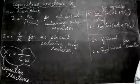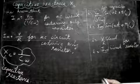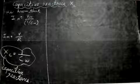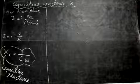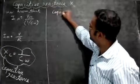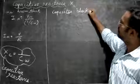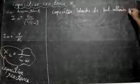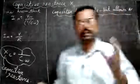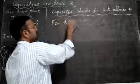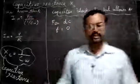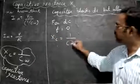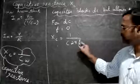Now let us see what happens to capacitive reactance for DC and for AC. A capacitor blocks DC but allows AC — the reverse of an inductor. For DC voltage, the frequency f = 0. The capacitive reactance is XC = 1/(Cω) = 1/(C · 2πf).